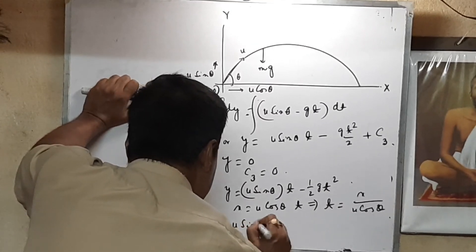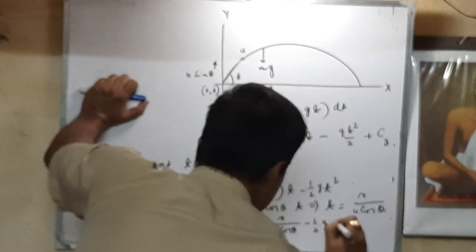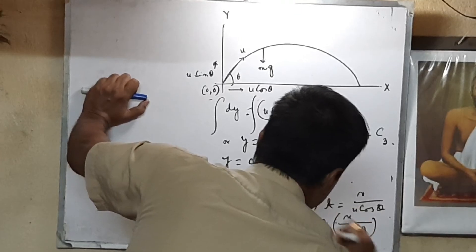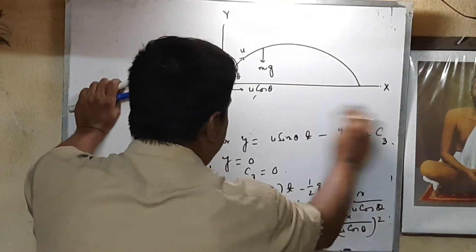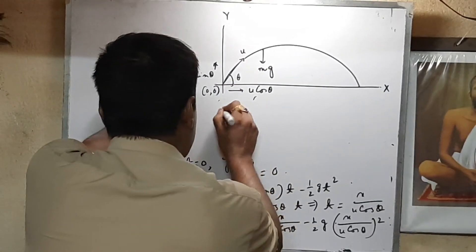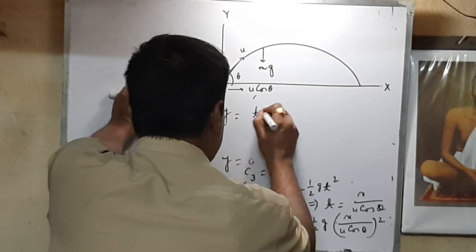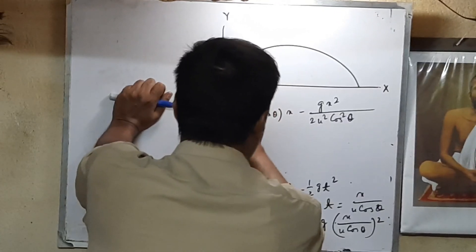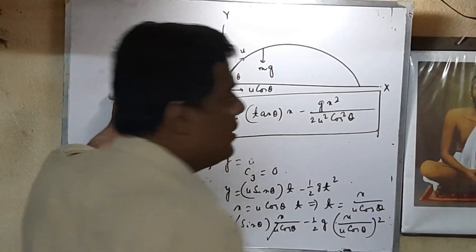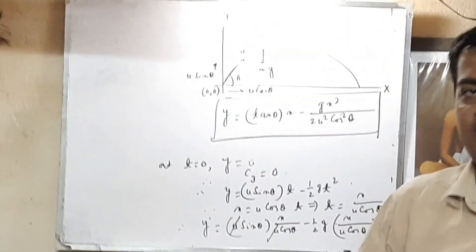We have already obtained x = u cos theta · t, so t = x / (u cos theta). Substituting into the equation for y: y = u sin theta · [x / (u cos theta)] − ½g · [x / (u cos theta)]², which simplifies to y = x tan theta − [g / (2u² cos² theta)] · x². This confirms the trajectory equation derived earlier, completing the calculus-based derivation.